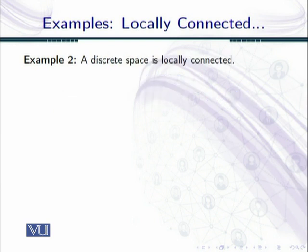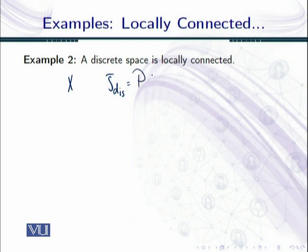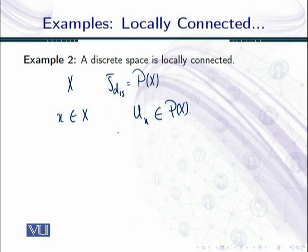Example two: a discrete space is locally connected. Any set x with the discrete topology is locally connected. Recall that in the discrete space the topology is the complete power set. Corresponding to any point of x and any open set U containing it, one can easily find V — the singleton set — and one can see that a singleton is connected. So the discrete space is locally connected.